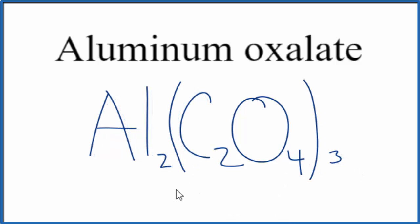This gives us the formula for aluminum oxalate: Al2(C2O4)3.